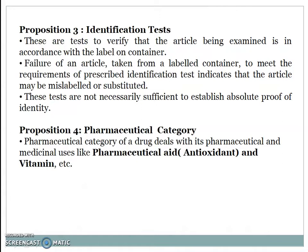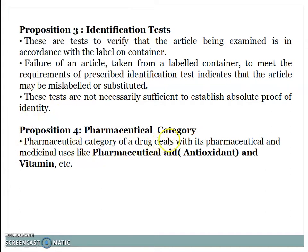Proposition 3: Identification Tests — these are tests to verify that the article being examined is in accordance with the label on the container. Failure to meet prescribed identification tests indicates the article may be mislabeled or substituted; these tests are not necessarily sufficient to establish absolute proof of identity. Proposition 4: Pharmaceutical Category — pharmaceutical and medicinal uses including pharmaceutical aid, antioxidant, and vitamin.